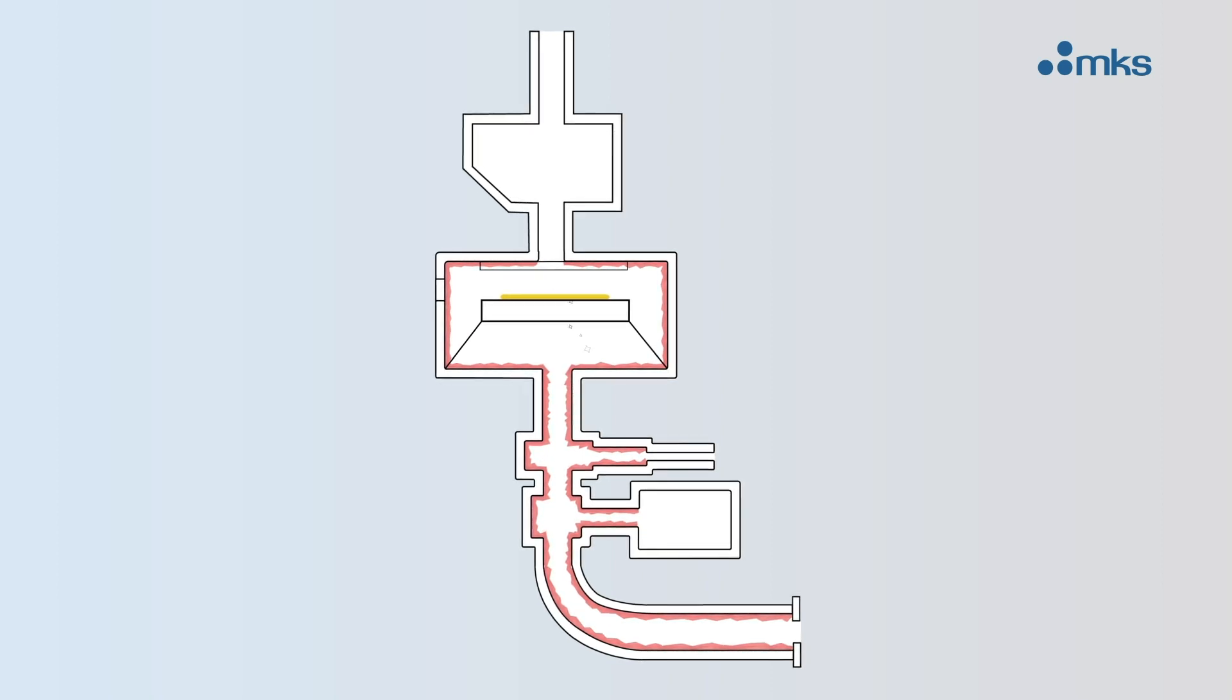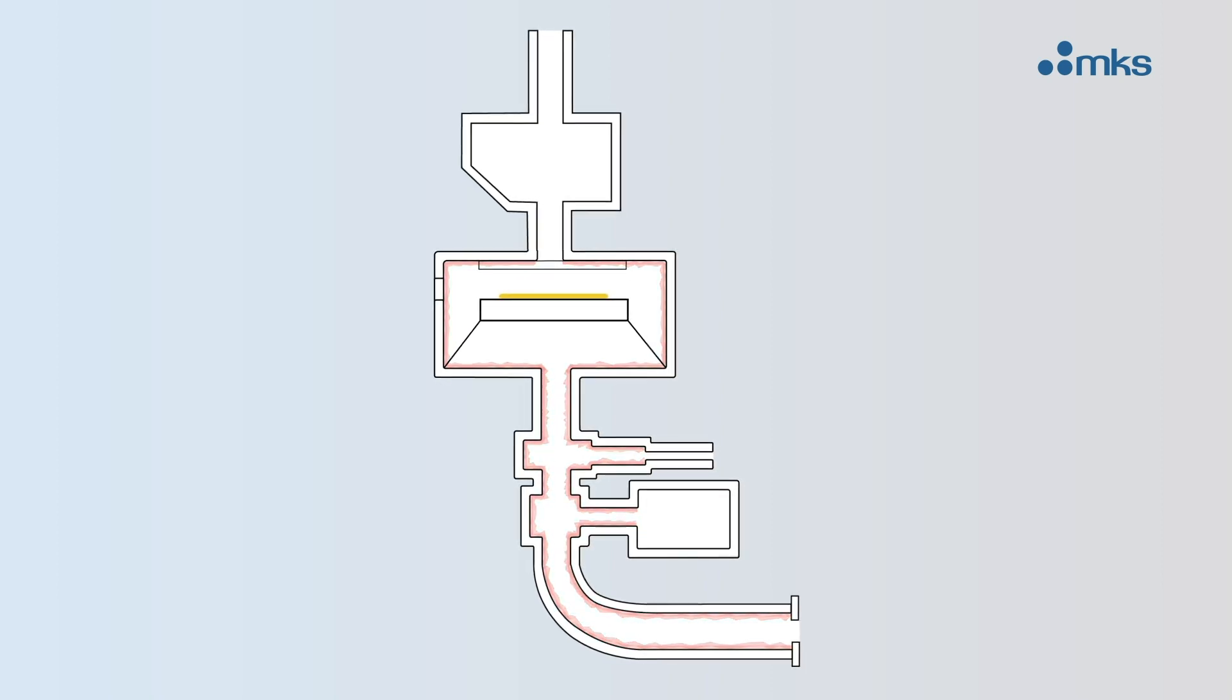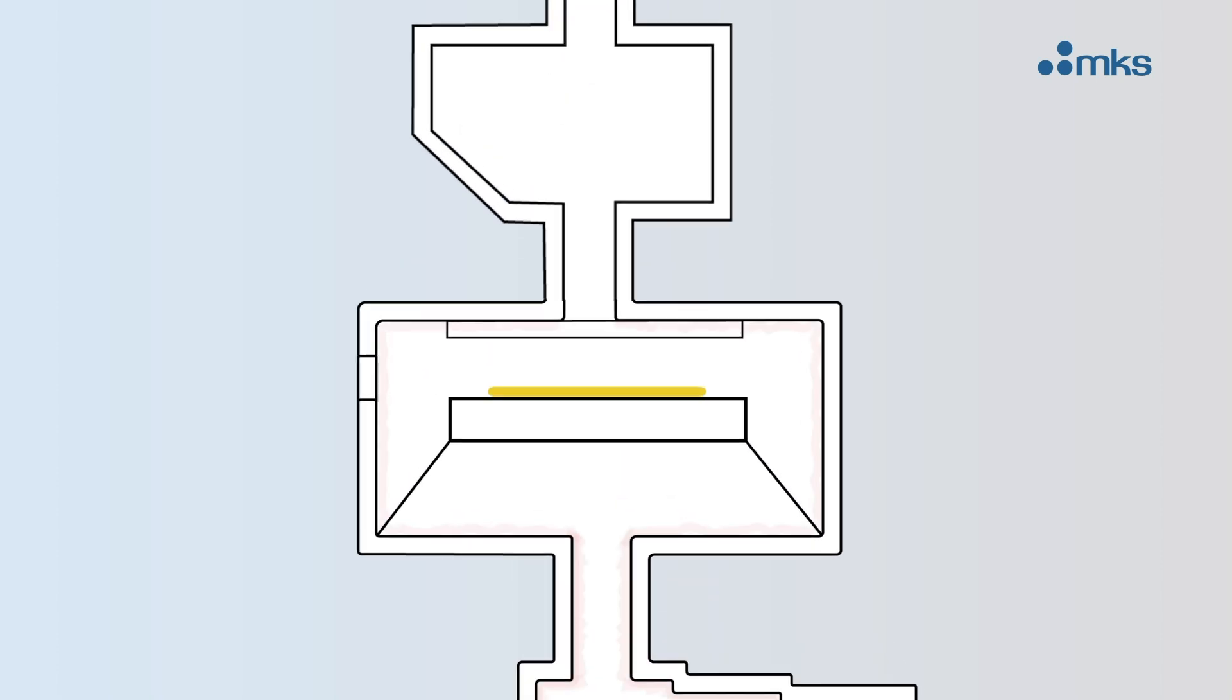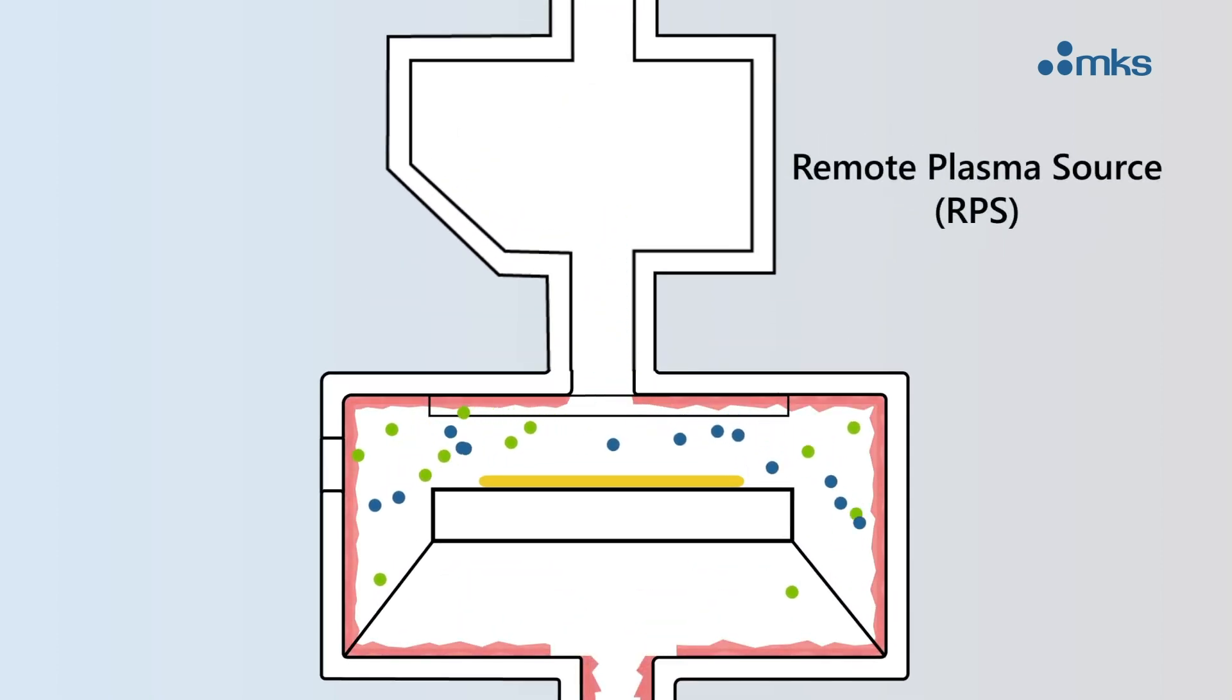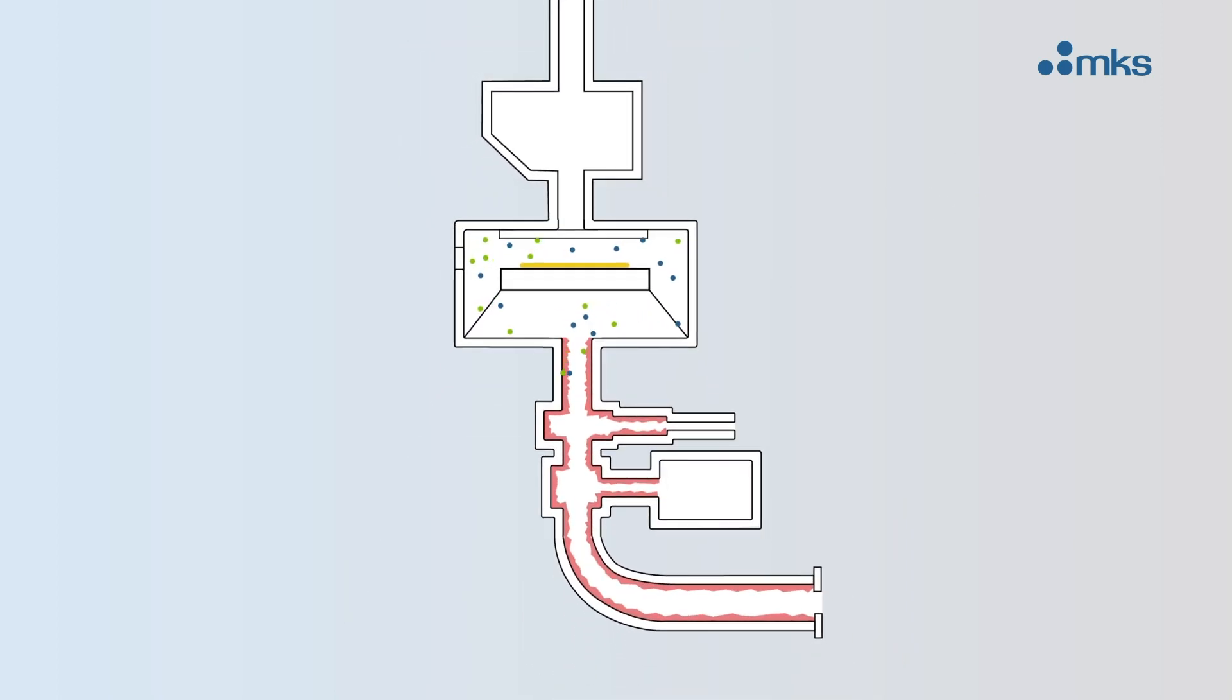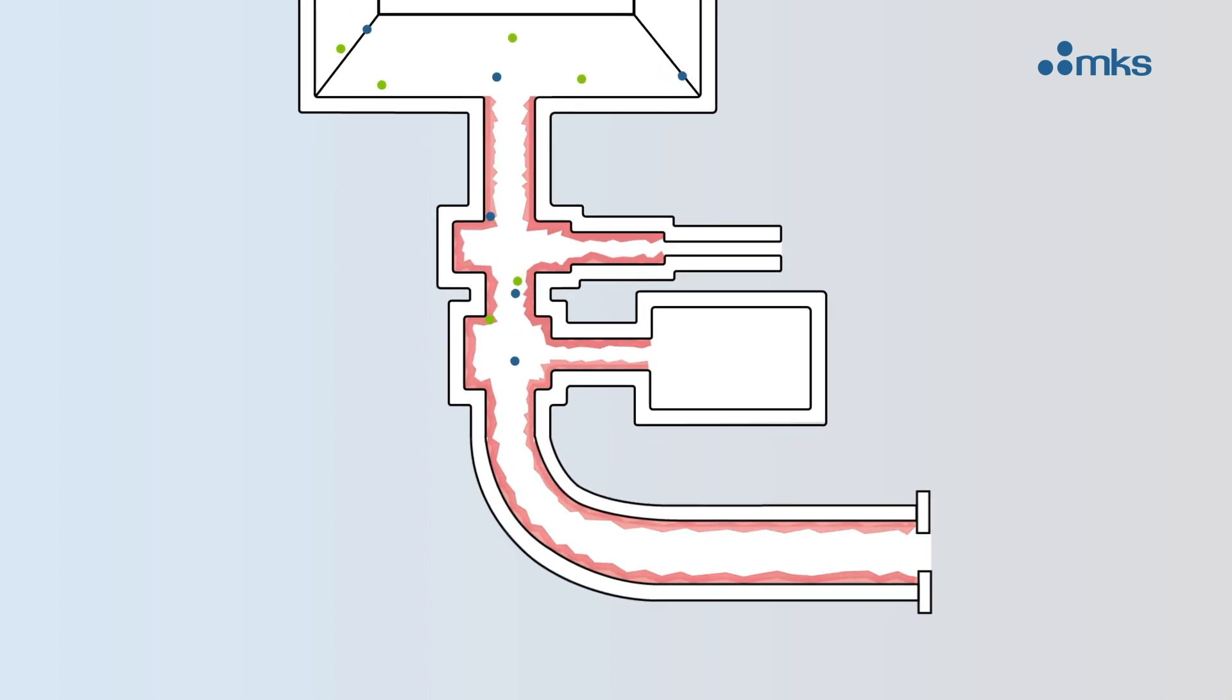The chamber and foreline must be cleaned regularly to remove the powder byproducts from the wafer manufacturing process. A remote plasma source can effectively clean the chamber but the cleaning gases dissipate and do not effectively clean the byproducts accumulating in the foreline.